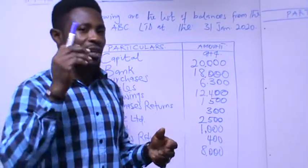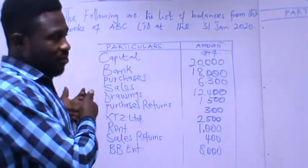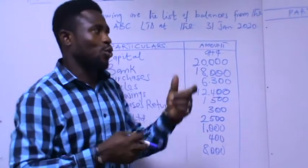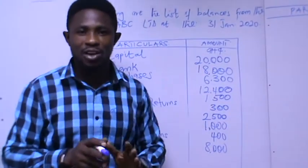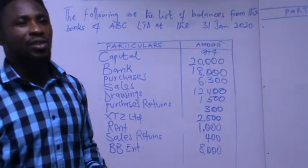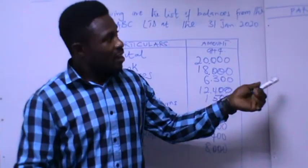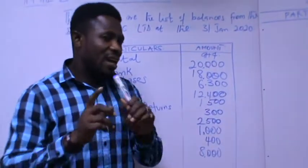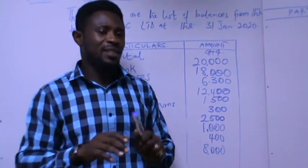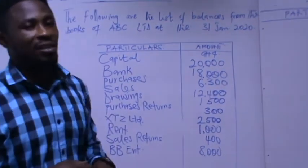However, saying that the trial balance checks arithmetic accuracy doesn't mean that errors cannot be committed in the transactions or in the balancing of the accounts. There are six errors that can be committed but will not affect the trial balance. Also, in accounting, anything that ends with 'balance' must balance at the end of preparing it.